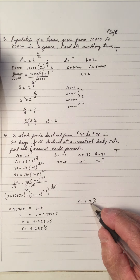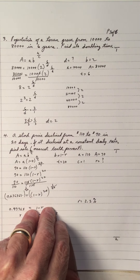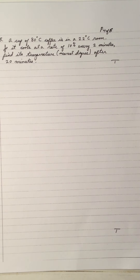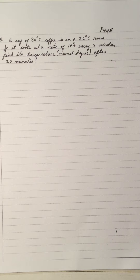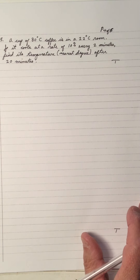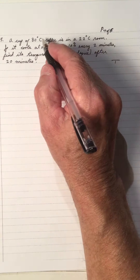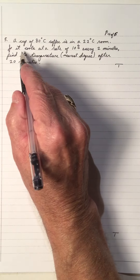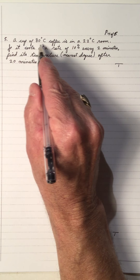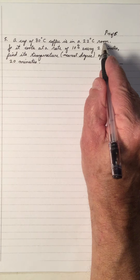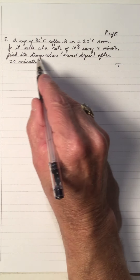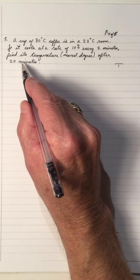Give yourself a mark if you have 2.2%. Two marks for that page. Now we have a problem dealing with cooling. A cup of 80-degree coffee is in a room of 22 degrees Celsius. If it cools at a rate of 10% every 2 minutes, find its temperature to the nearest degree after 20 minutes.